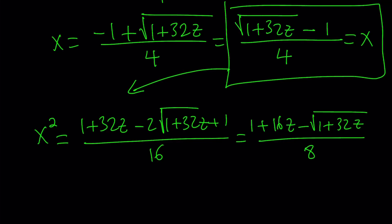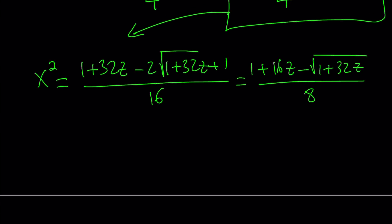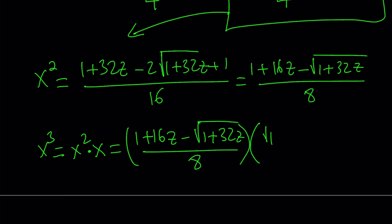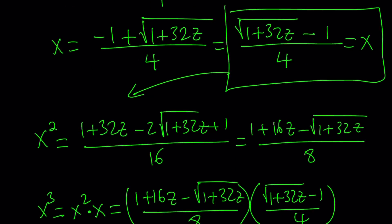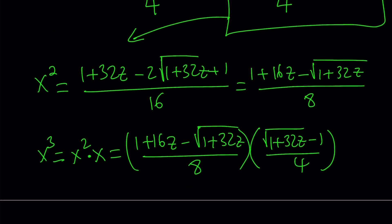Now I want to find x cubed. To find x cubed, I'm going to use x squared times x. I already have an expression for x squared, so why not use it. And then multiply that by x. But x I already know, it's equal to square root of 1 plus 32z minus 1 over 4. That was the very first thing we found by using the quadratic formula.